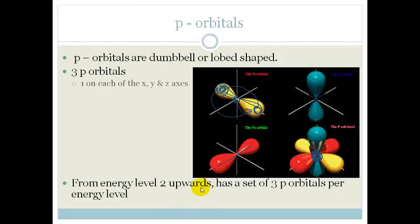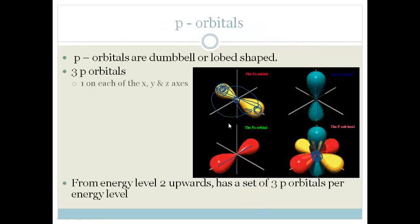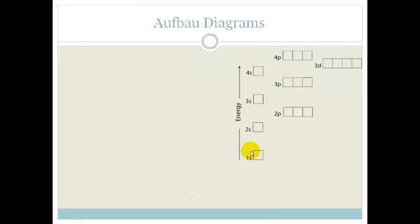Again, from energy level two upwards, there are three, sorry, there's a set of three p-orbitals per energy level. Now, these orbitals are terrible to draw. And as we know from me, I'm a terrible artist, so I struggle with them.